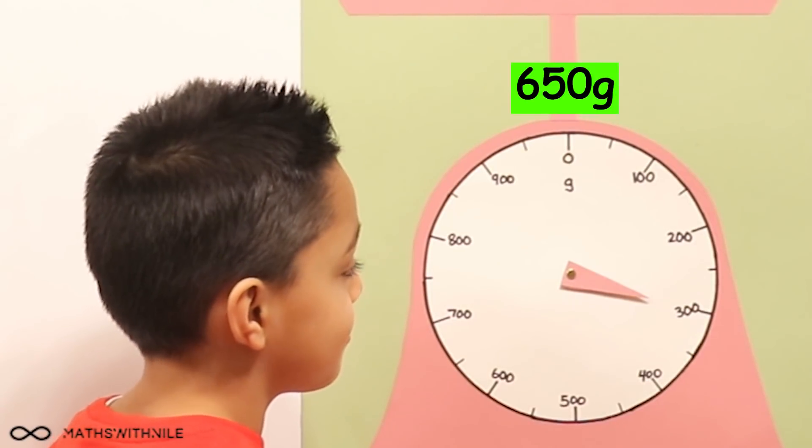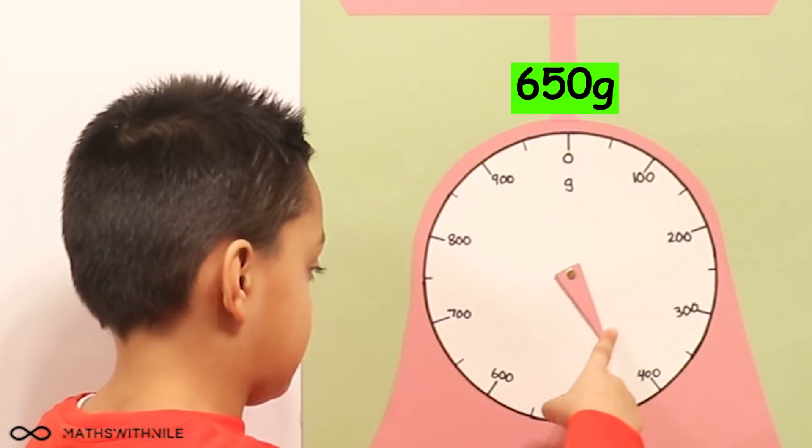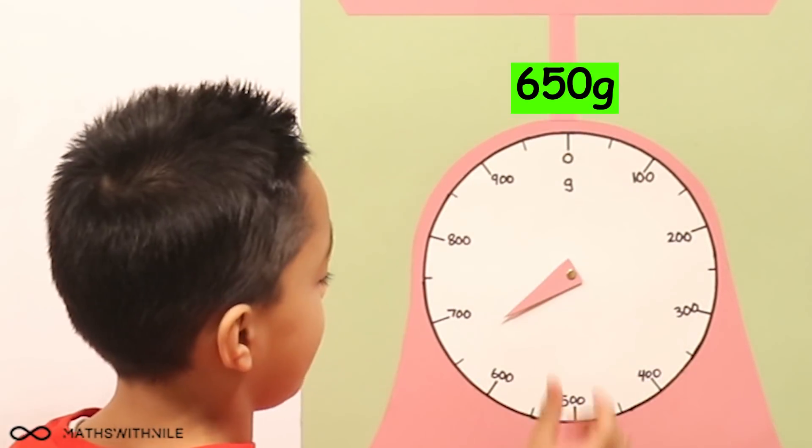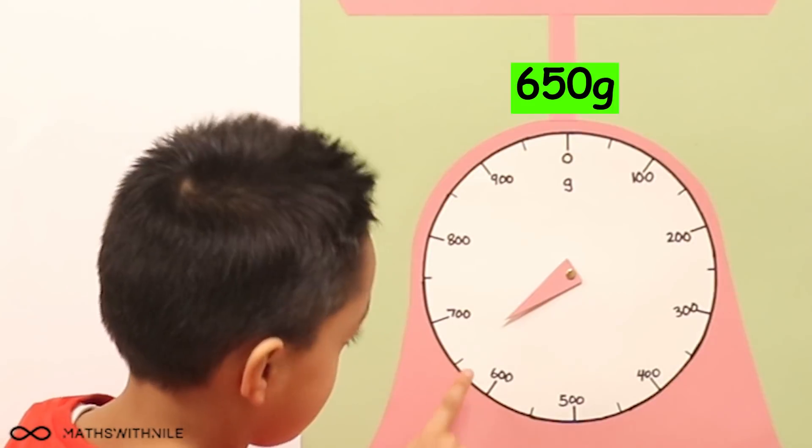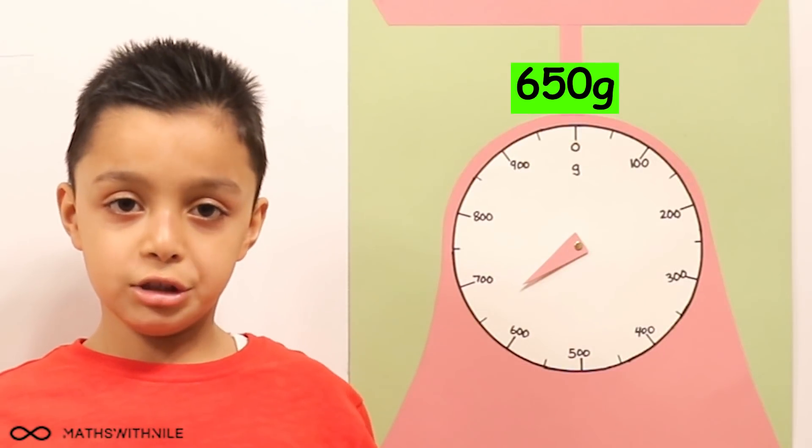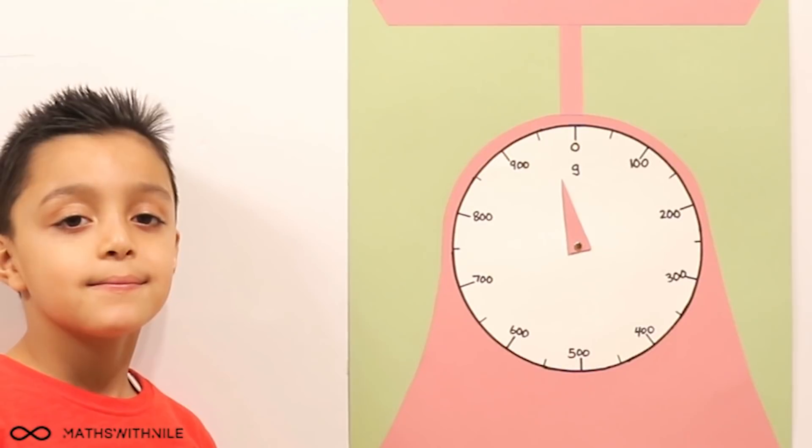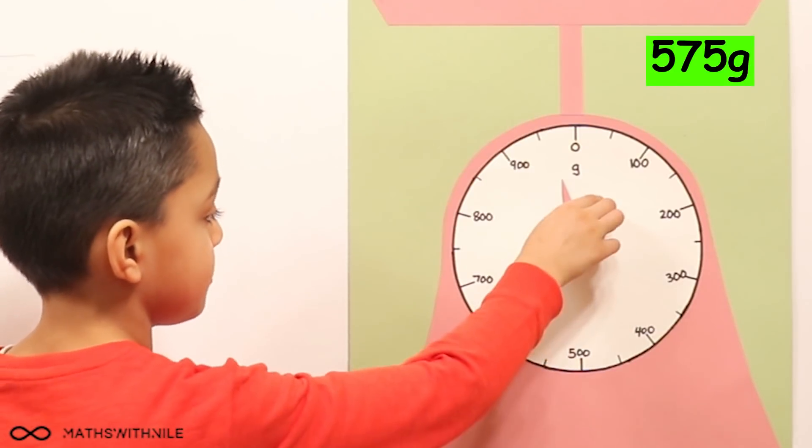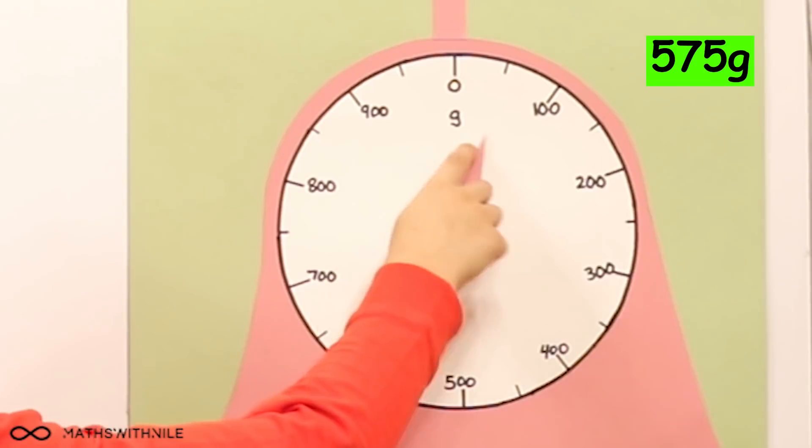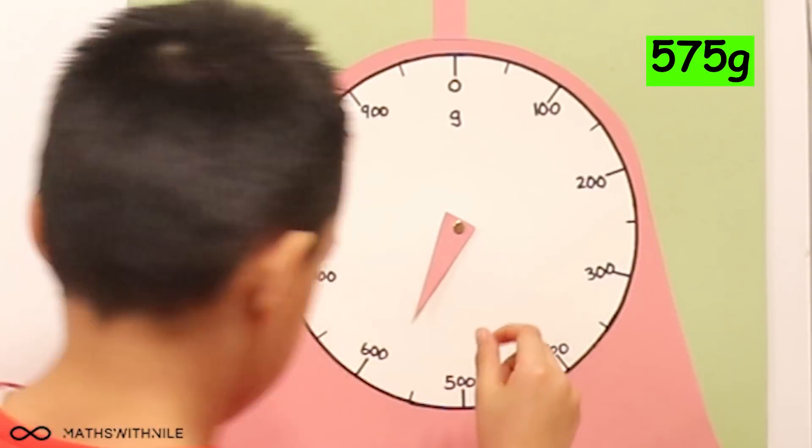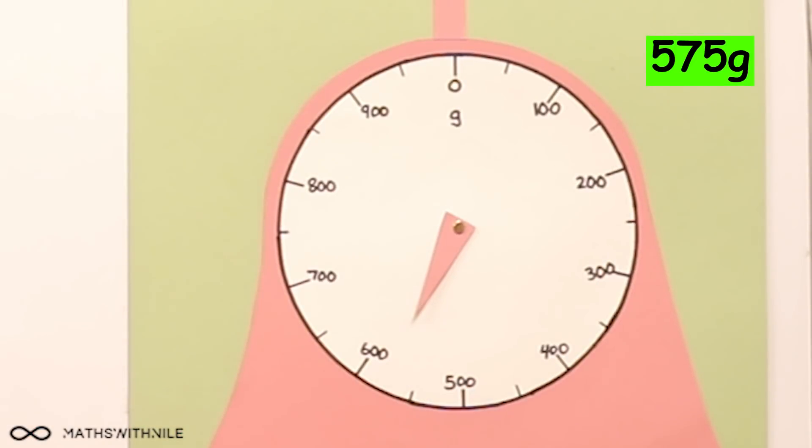And where is 650 grams? 600, 700, there's no 50, but in the middle there is a line. Okay, and even if there wasn't a line, we know that 650 is halfway between 600 and 700. Now let's do one more to finish off. Can you show me where 575 grams would be? 575 in the middle of 550 and 600. Very good.